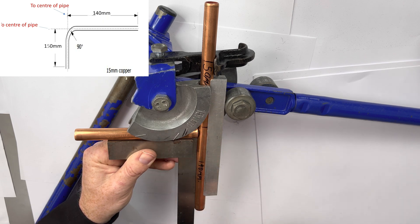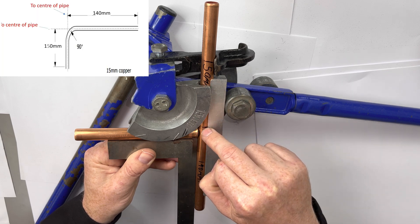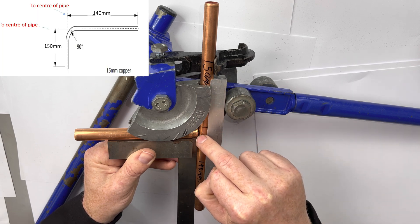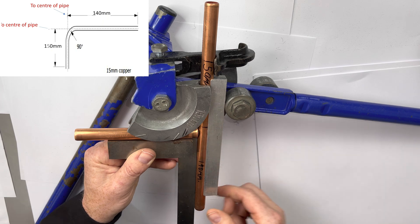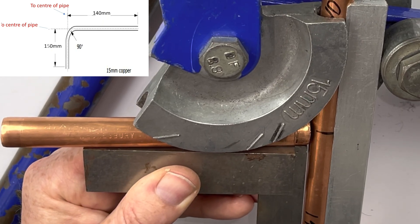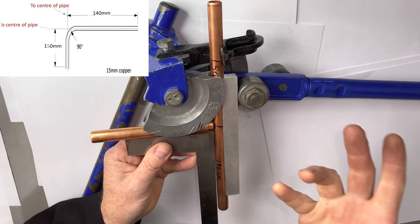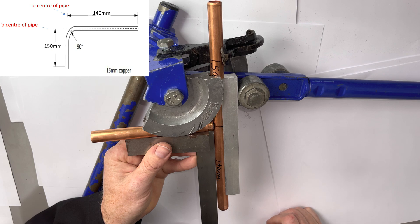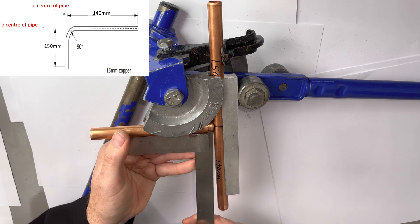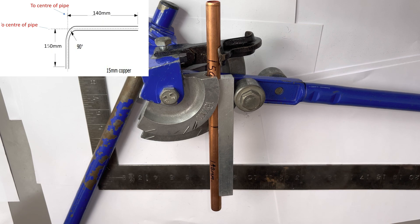What we need to do is the 150 line needs to be moved to the centre like this. Let's bend the pipe 90 degrees.